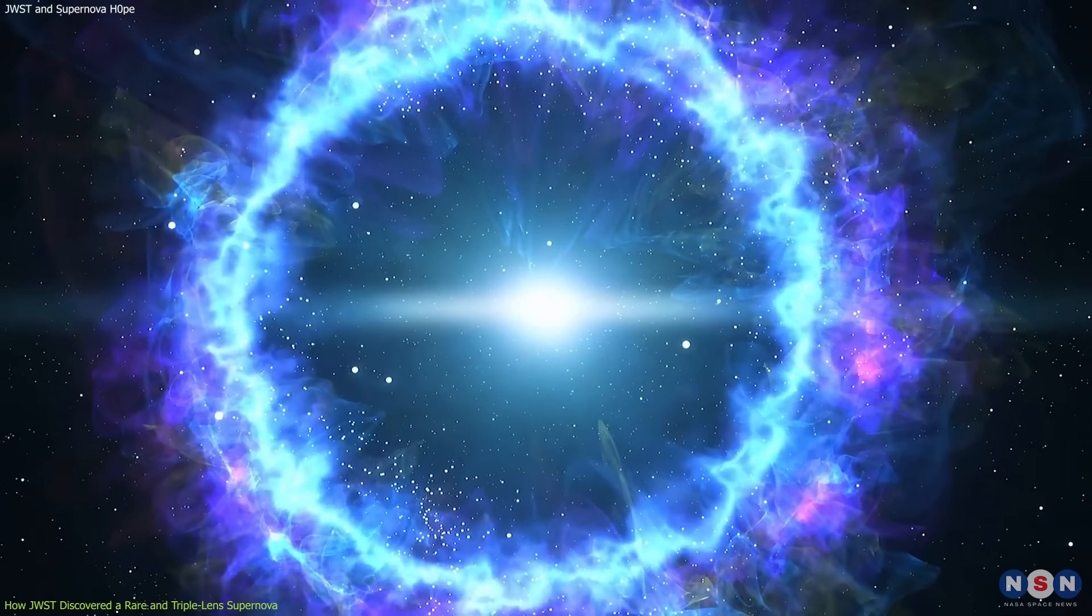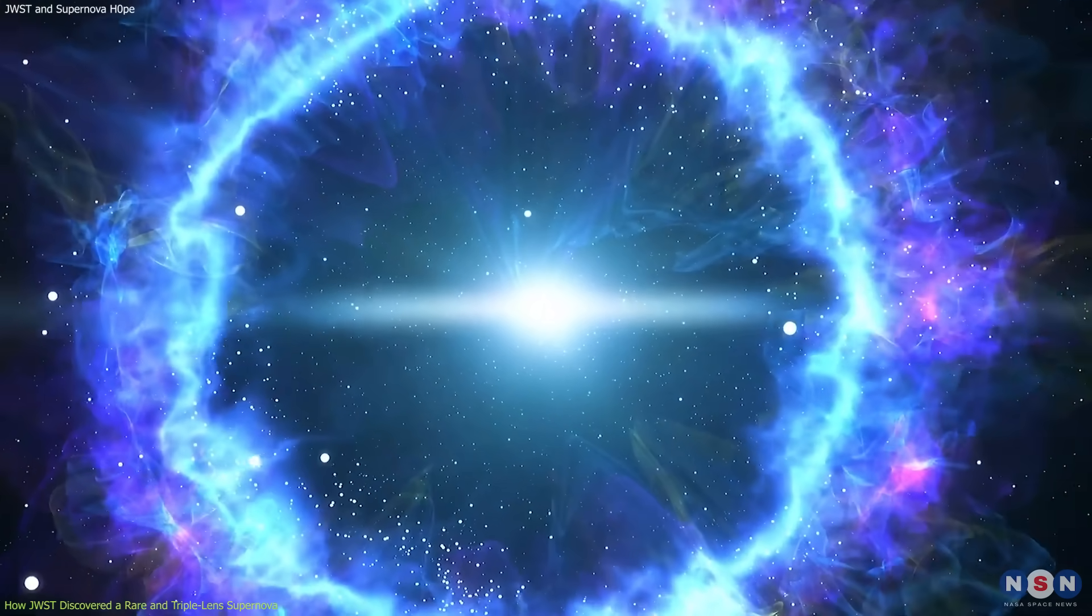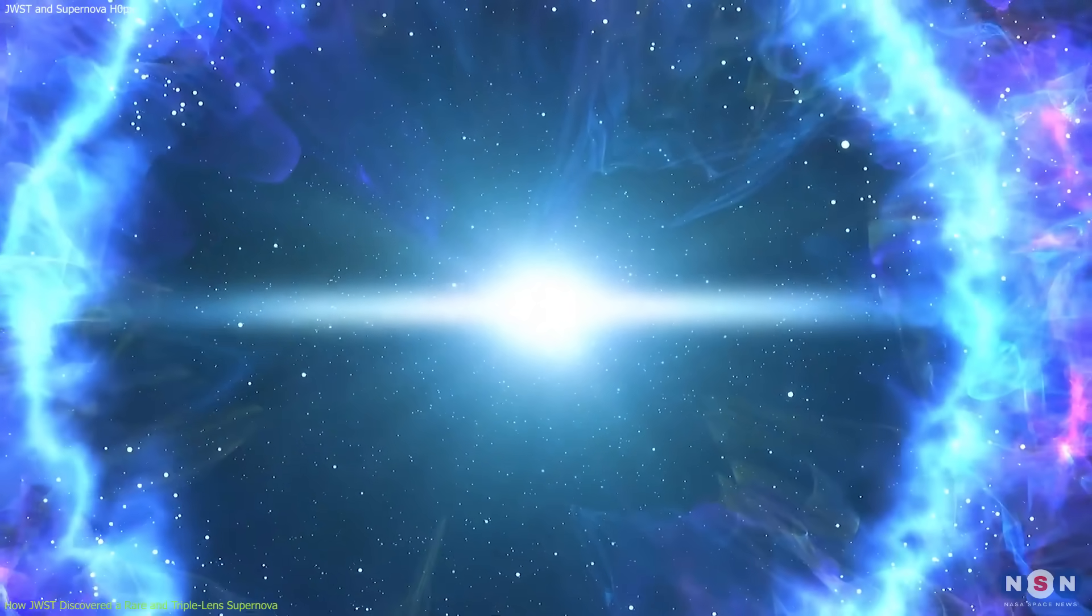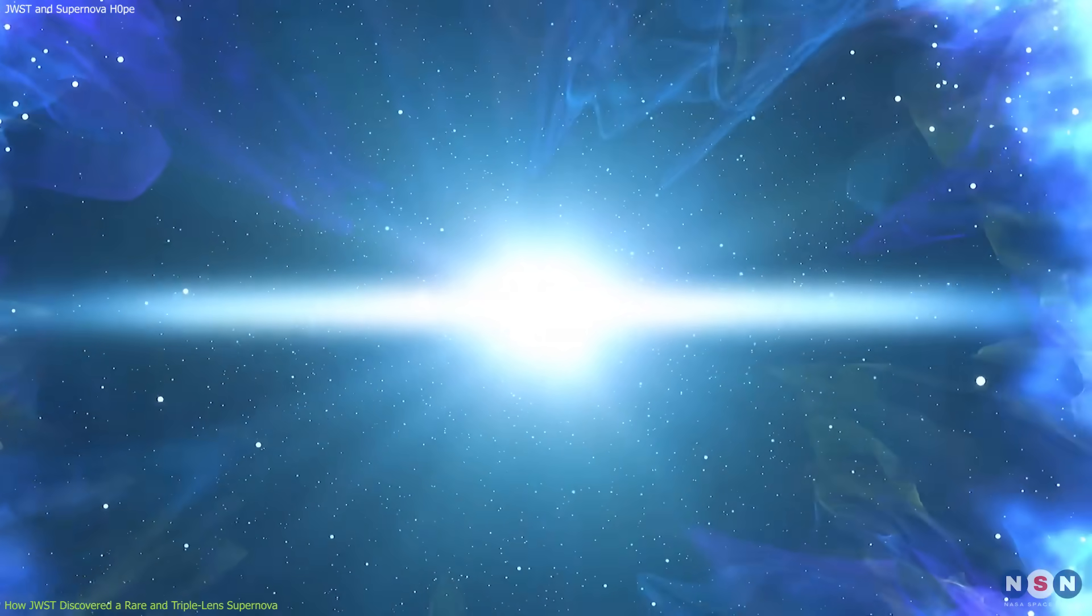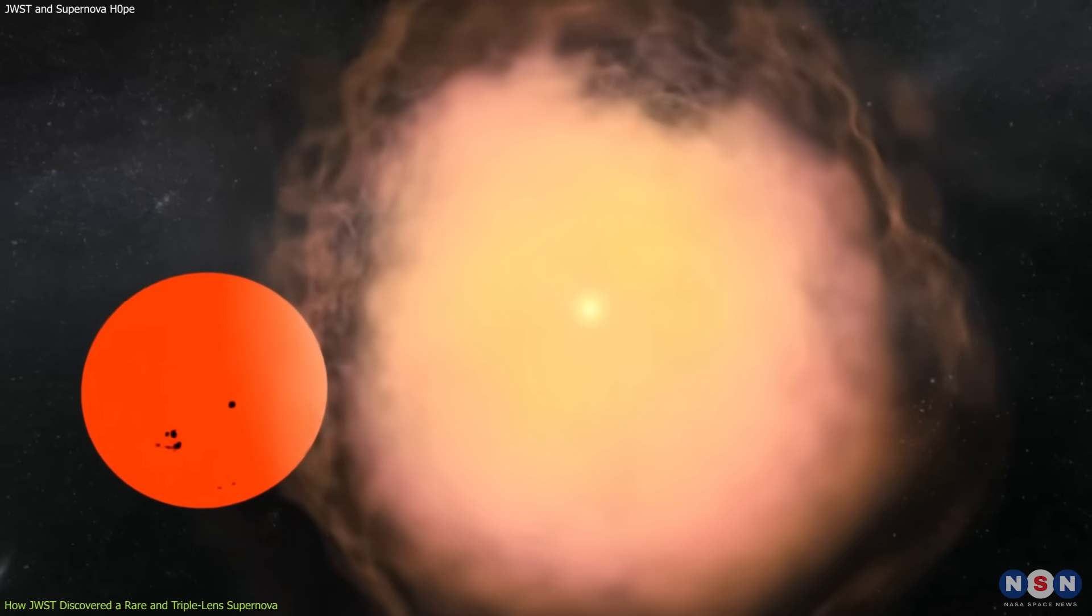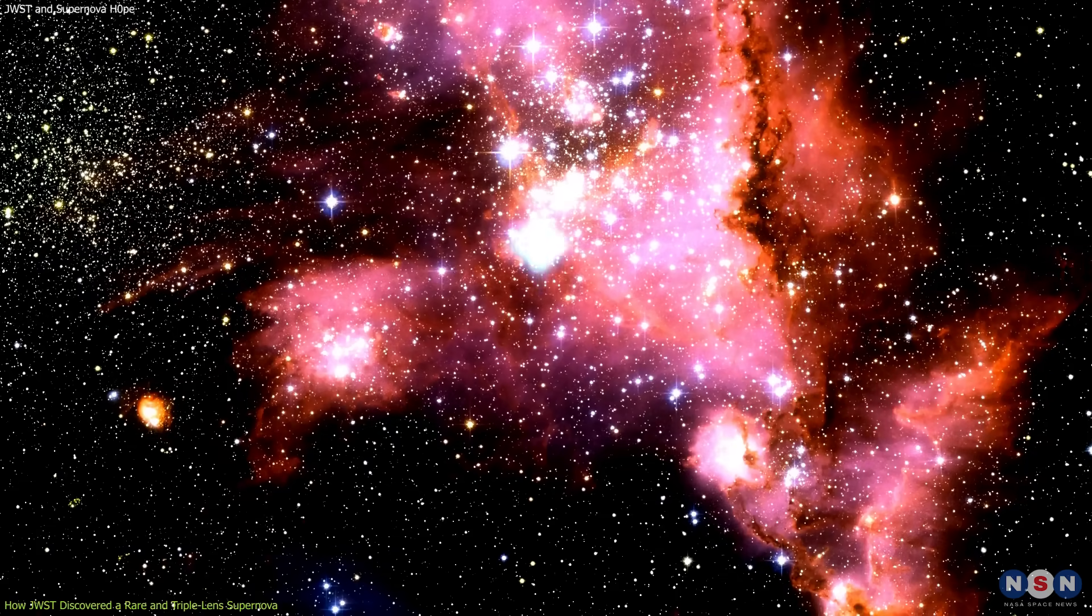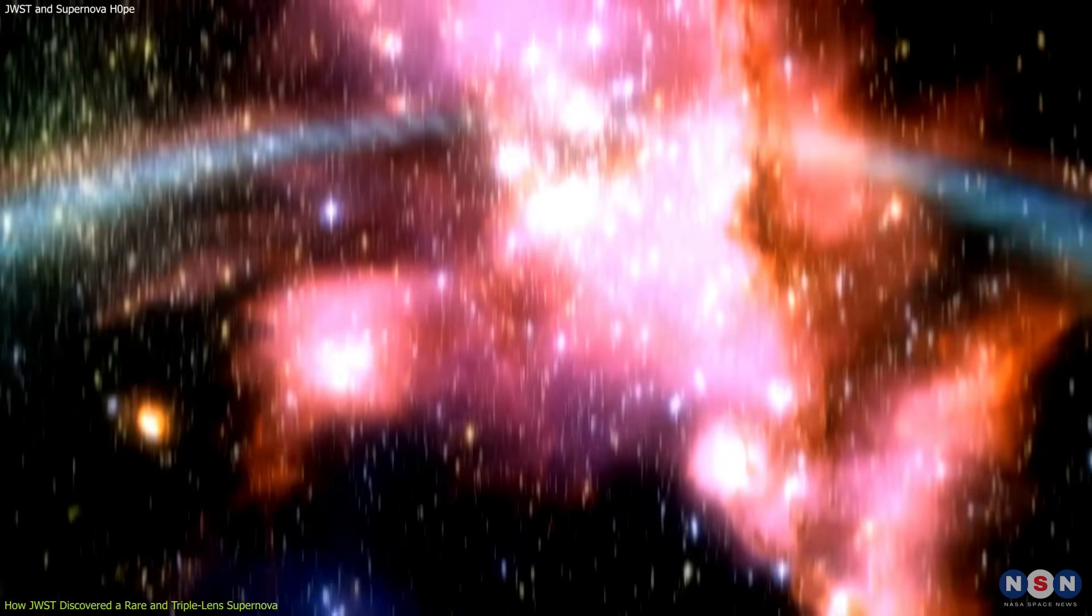A white dwarf is the remnant of a low-mass star that has exhausted its nuclear fuel and collapsed into a dense sphere about the size of Earth. Type Ia supernovae are very bright and emit a lot of energy in the form of light and radiation. It can outshine an entire galaxy for a brief period of time.